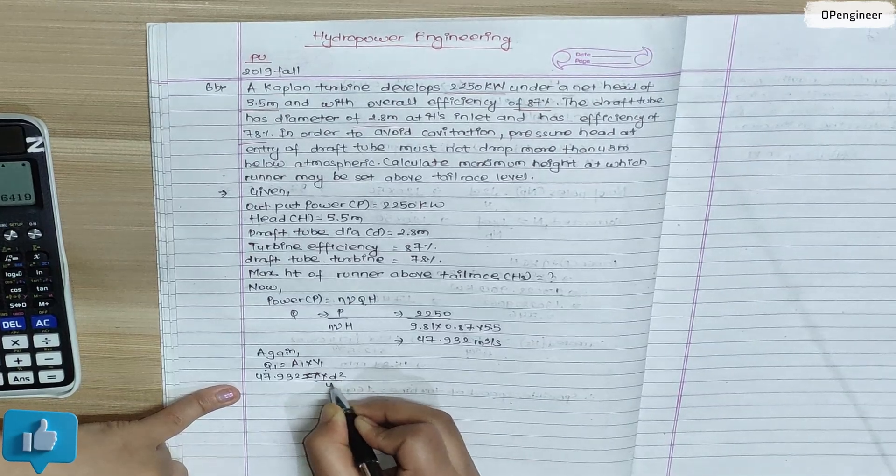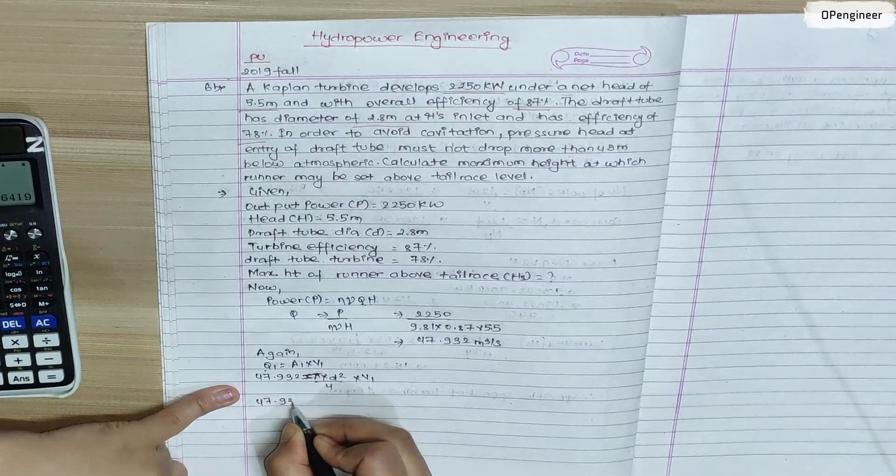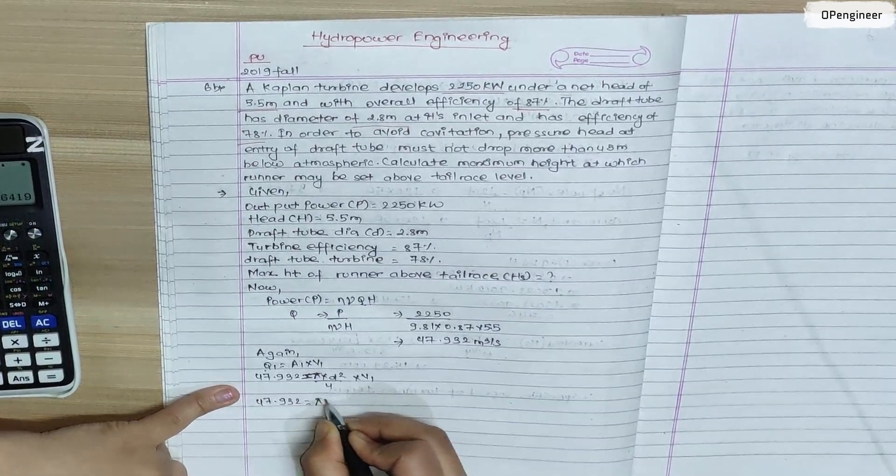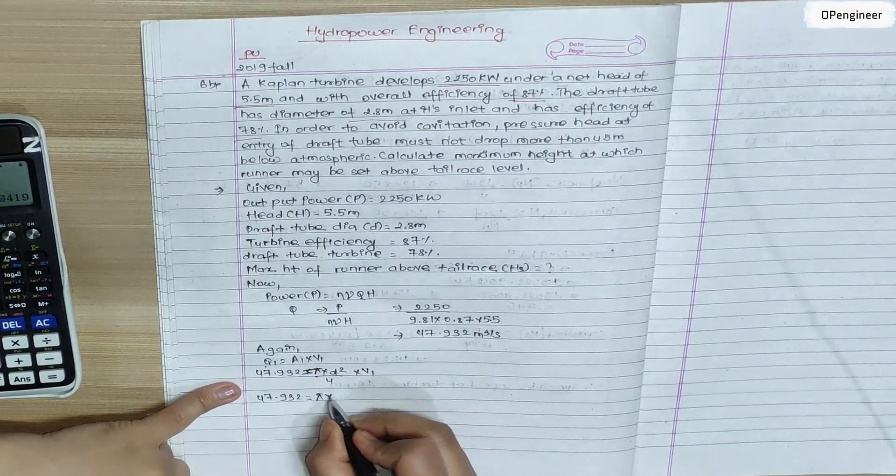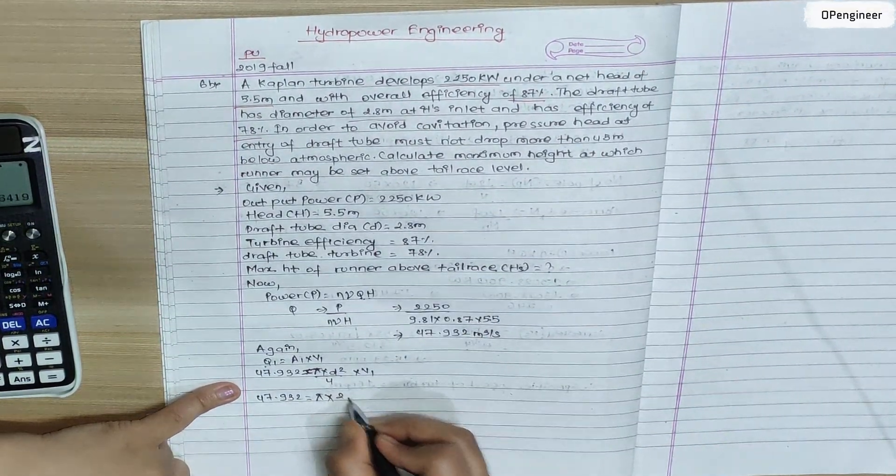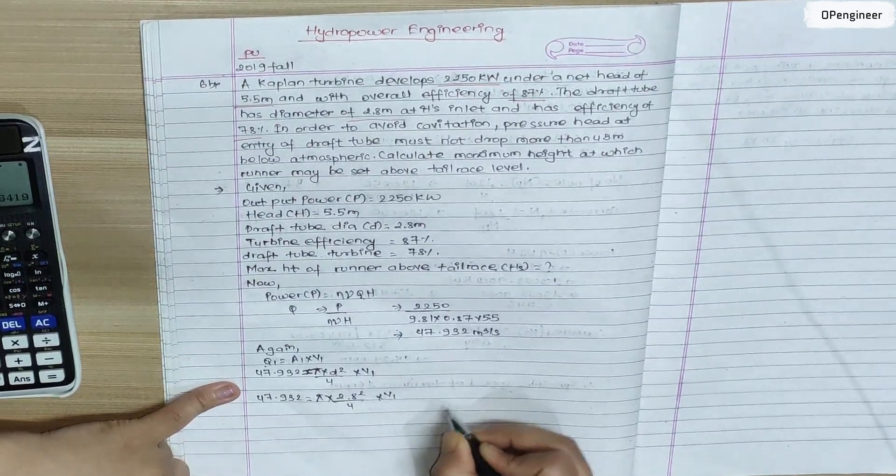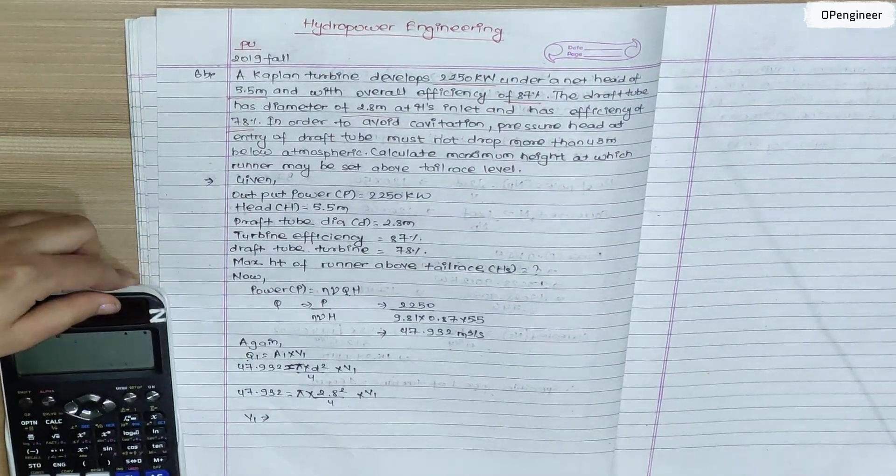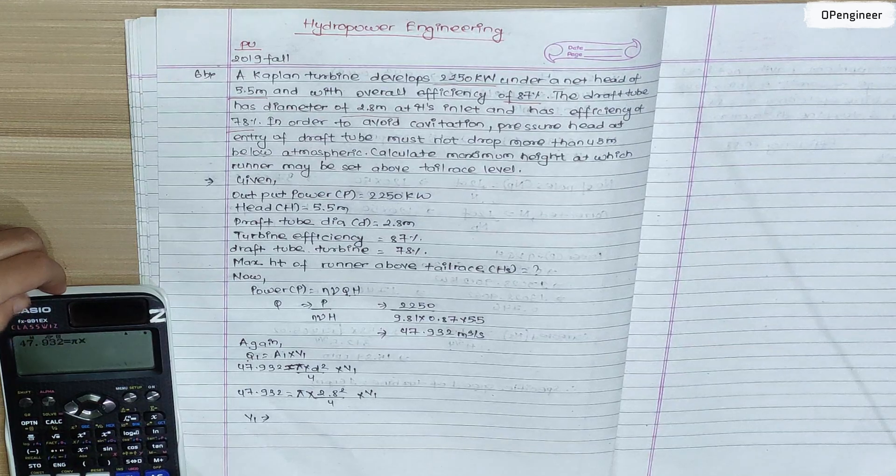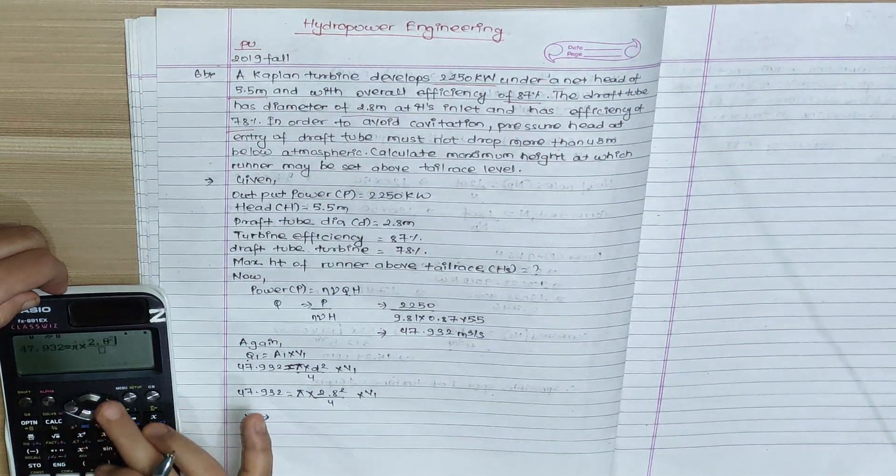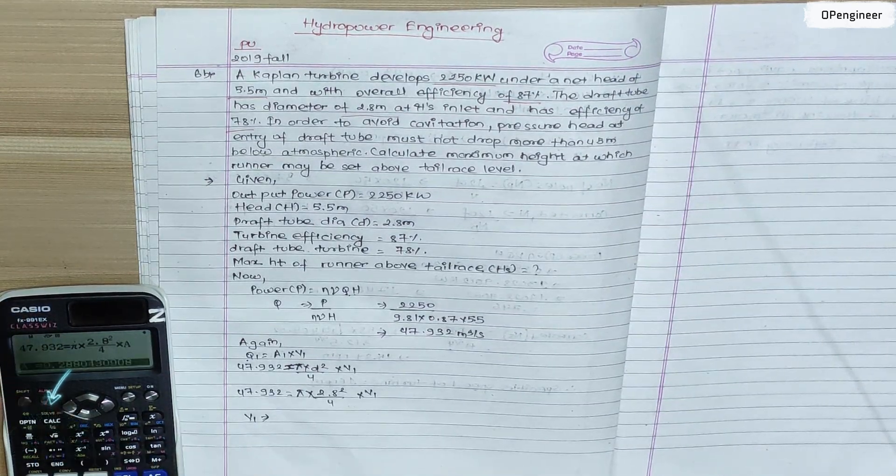47.932 equals to π into diameter 2.8 meter, the draft tube diameter 2.8 square by 4 into V1. After calculation, V1 equals 7.78 meter per second.